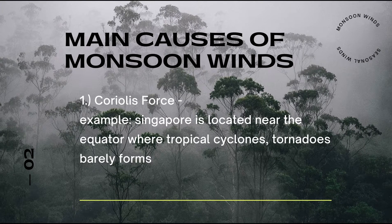There are three main causes of monsoon winds, and one of them is the Coriolis force. This occurs because wind essentially moves from high to low pressure areas. As the wind is deflected towards the right in the Northern Hemisphere, this will become the southwest monsoon. During this process, landmass and water begin to cool, and land starts losing heat faster than the ocean.